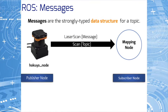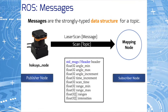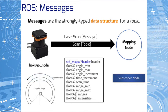The data itself is shared in the form of ROS messages, which is really a data structure. With our HOKOYU node lidar example, the messages published on the topic scan are of the type laser scan. The laser scan data structure includes multiple data fields. Don't worry if you don't understand what these fields mean — they correspond to the raw data obtained from the lidar as it scans its environment.